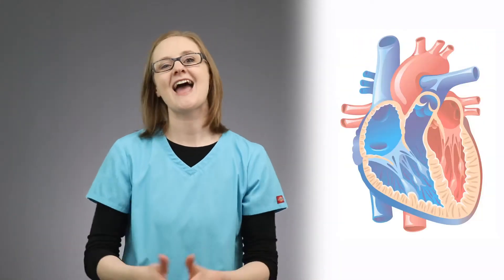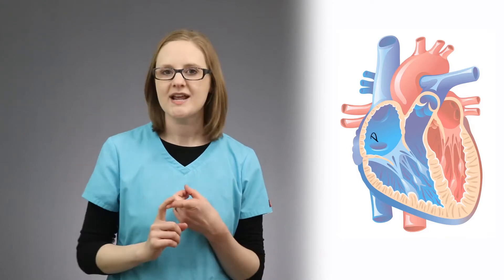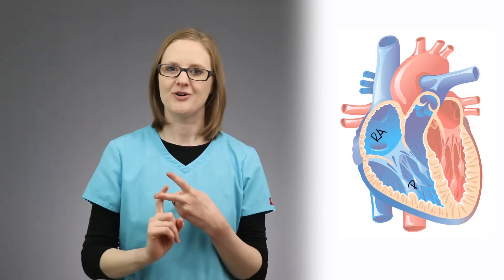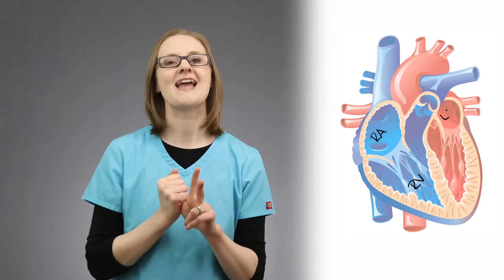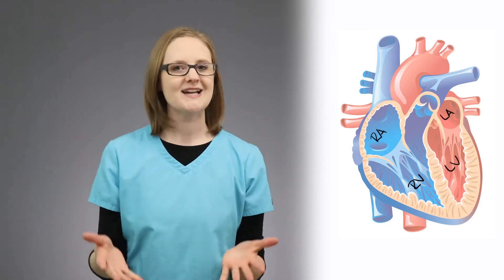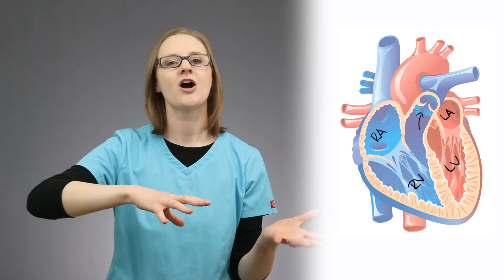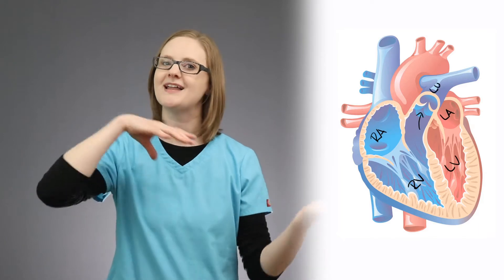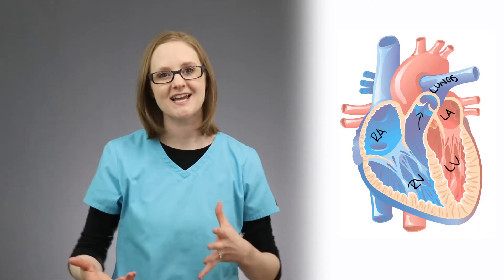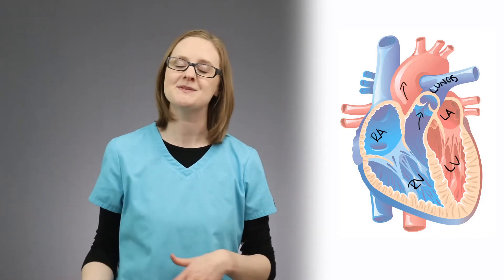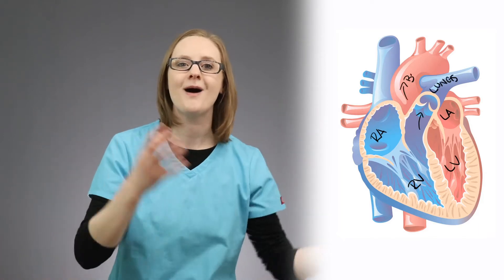The heart is divided up into four main chambers: the right atrium, the right ventricle, the left atrium, and the left ventricle. Now the right side of the heart pumps blood to the lungs, and the left side of the heart pumps blood to the body.